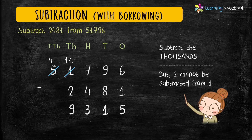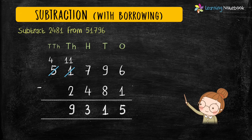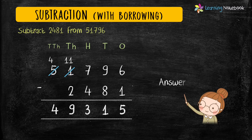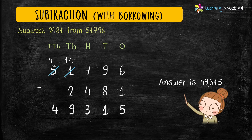Now let's put the digit at the ten-thousands place, which is 4. So our answer is 49,315. This is how we do subtraction with borrowing.